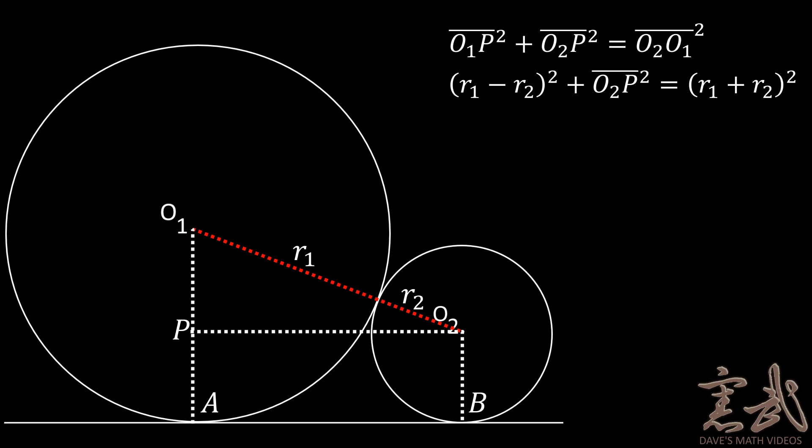However, as we can see, Op is simply the difference in length between R1 and R2. So we can write that O1p squared is simply the quantity R1 minus R2 squared. Likewise, the hypotenuse O2, O1 is the quantity R1 plus R2 squared.